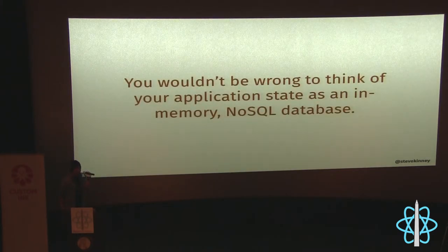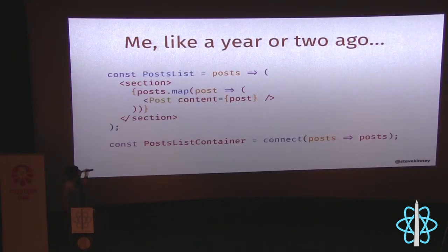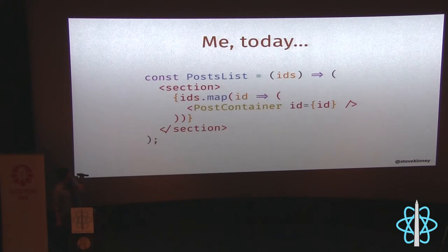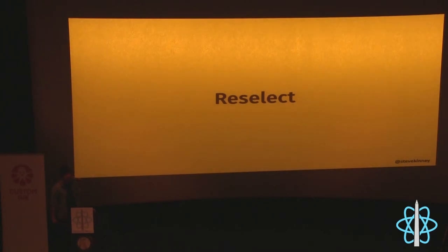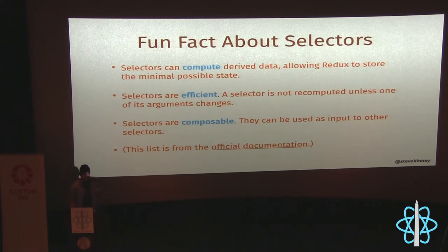Break up your containers. If you make a PostList container and pass it all posts, any single post change re-renders the entire list and all sub-components. Instead, pass in a list of IDs and have each individual post container take its own ID and connect to state — then you only re-render the one that changed. Also memoize your selectors: if you're passing effectively the same array into mapStateToProps, libraries like Reselect will skip recalculating that value entirely, using the cached result from last time.